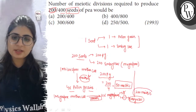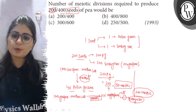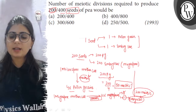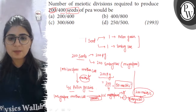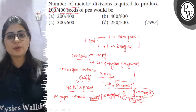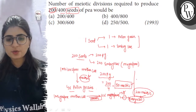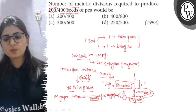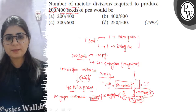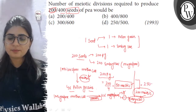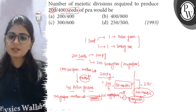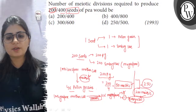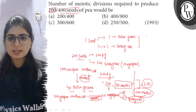So, 200 meiotic divisions to produce 200 embryo sacs, and 50 meiotic divisions to produce 200 pollen grains. The total is 250 meiotic divisions to produce 200 seeds.